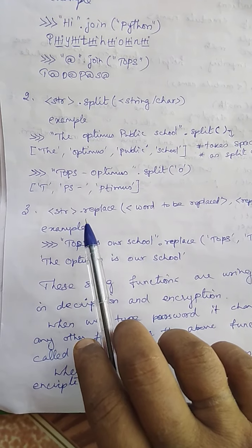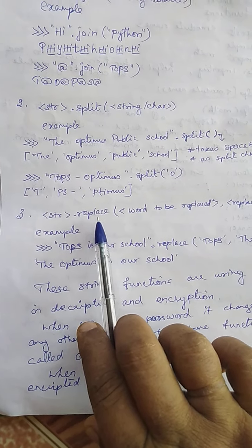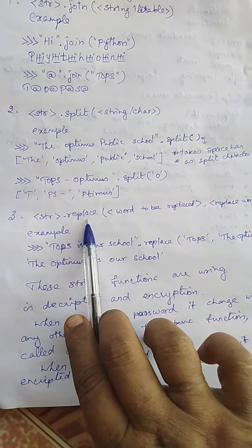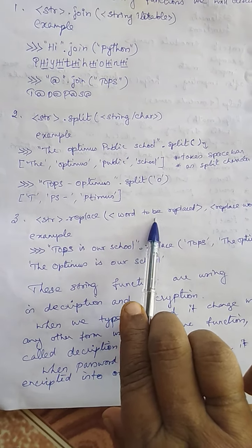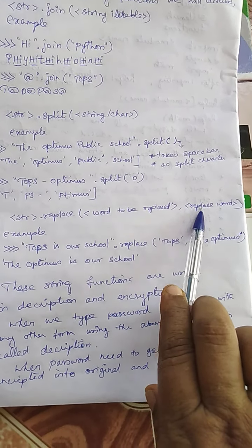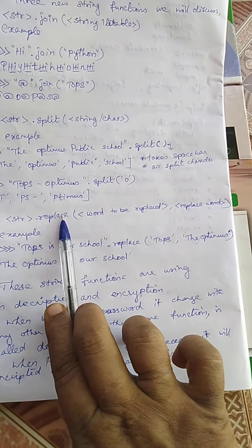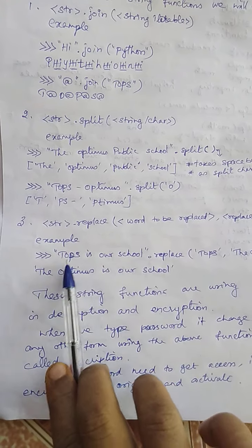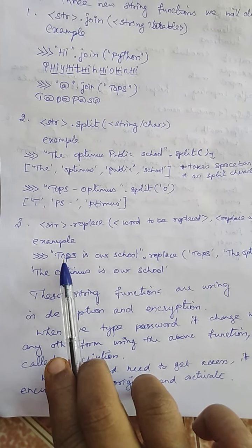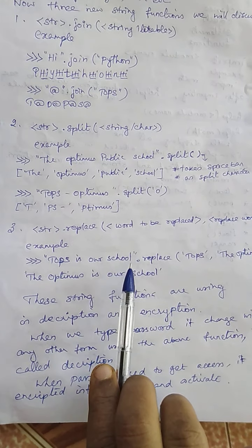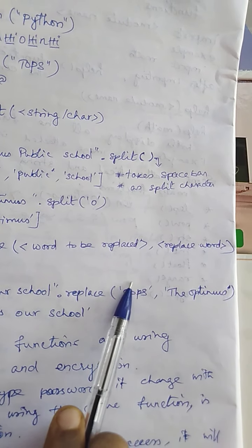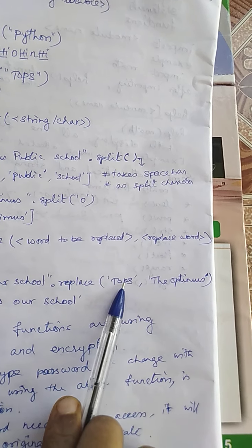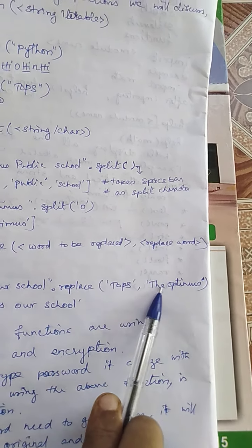The third function is string dot replace. We can replace any word with any other word, any character with any other character. The string on which we call replace — the word or character that has to be replaced is given as the first argument of the replace function, and the word to replace it with is given as the second argument. So replace is a function having two arguments.